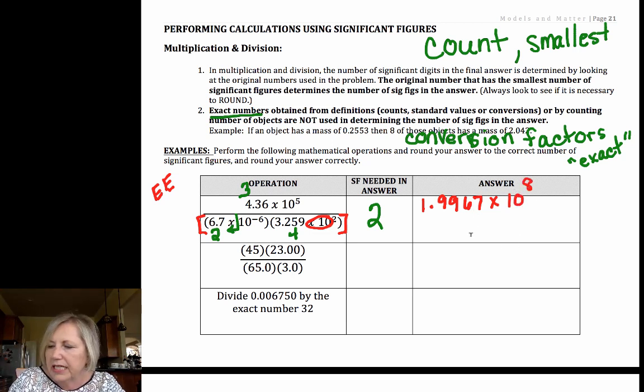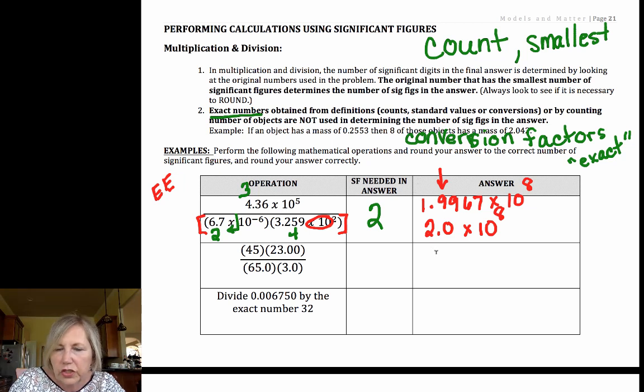Perform that calculation, double-check my work, and make sure you get the same answer. Before rounding, I got 1.9967 times 10 to the eighth. We must round to two sig figs. Well, that nine is going to round that up, so I have to round to the tenths place. So this is a tricky one for rounding. The nine rounds that nine up, which rounds the one to a two. Just make sure: 1.9 rounds to 2.0.